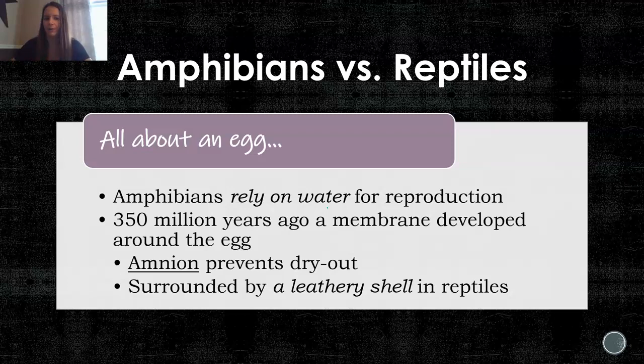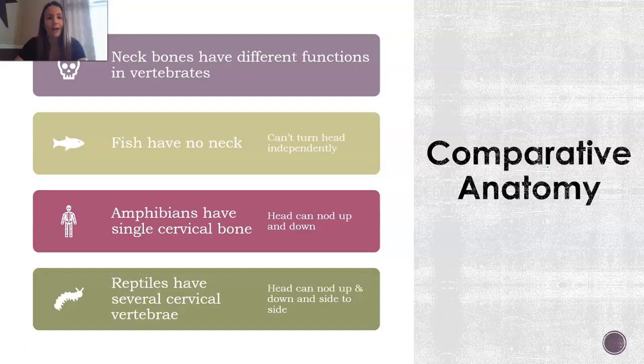It really comes down to their egg. As you remember, amphibians rely on water for reproduction because that's what their eggs need to hatch babies. But 350 million years ago, this really important membrane called the amnion developed around an egg, which helps prevent dry out. And in reptiles, it's usually surrounded by a leathery shell.